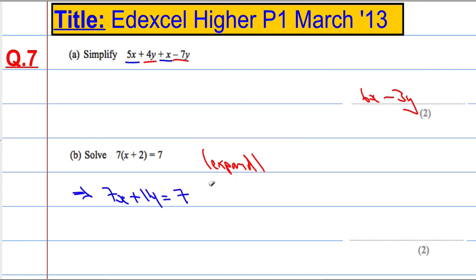Next thing we're going to do is we're going to take 14 away from both sides. So taking 14 away from both sides, that gives me 7x equals, well, 7 take away 14 is minus 7. And then finally we could divide both sides by 7. So 7x divided by 7 is simply x, and minus 7 divided by 7 is minus 1. So the answer is x equals minus 1.